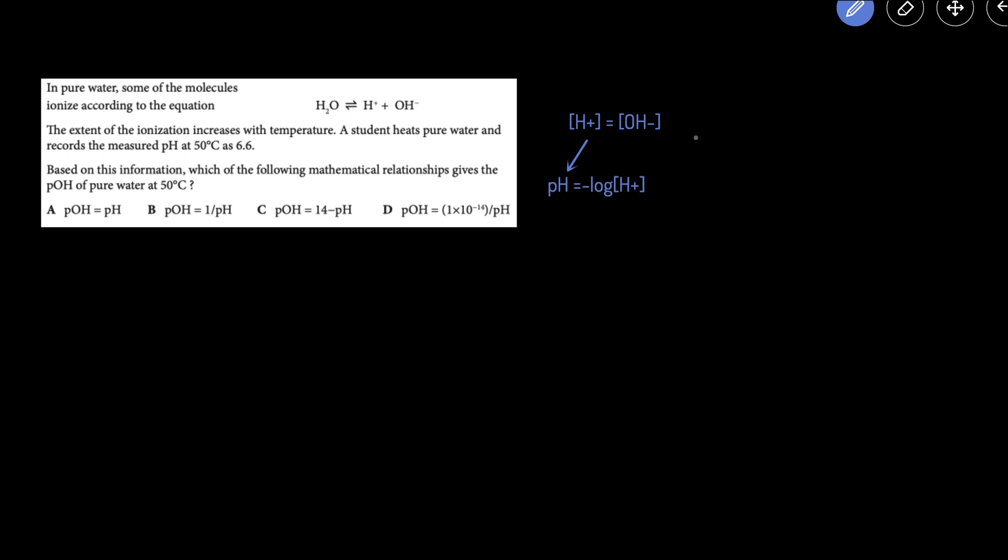To get the pOH, we take the negative log of the OH-. Since the H+ and OH- concentrations are the same, the pH has to equal the pOH. That's true for whatever temperature water is, so the answer here is going to be A.